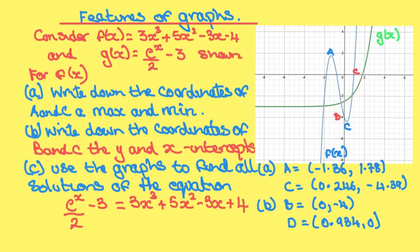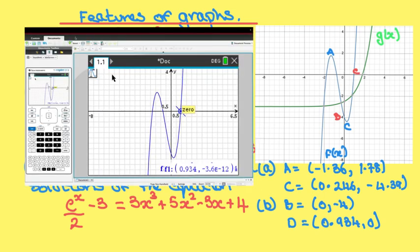Now for part c, use the graphs to find all the solutions of the equation e^(x/2) - 3 = 3x³ + 5x² - 3x + 4. So let's go back to our original graph on our GDC, which is already there.